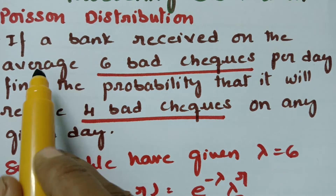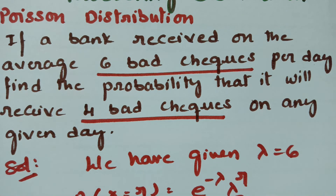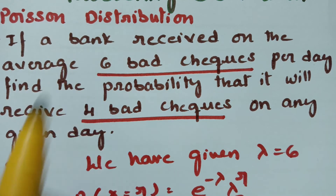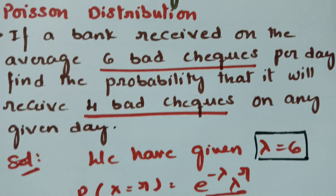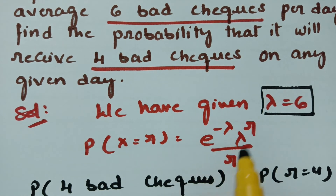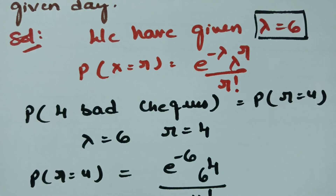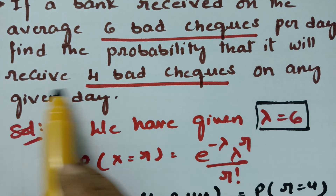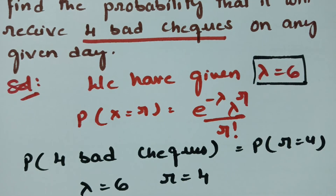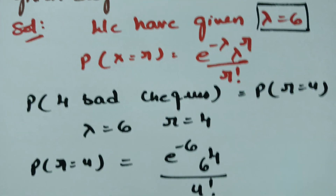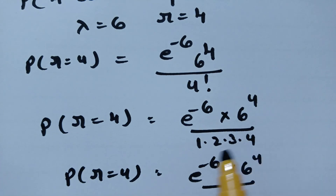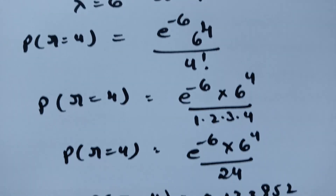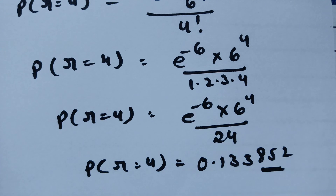To summarize: when an average is given, choose the Poisson distribution and set lambda equal to six. Using the formula e^(−λ) · λ^r / r!, with r equal to four, we substitute to get e^(−6) · 6^4 / 4!. Since 4! equals 24, the final answer is 0.133852.